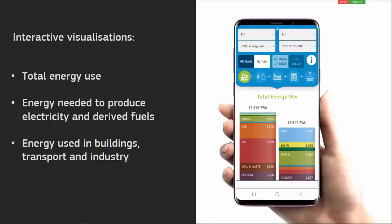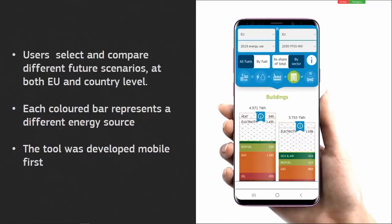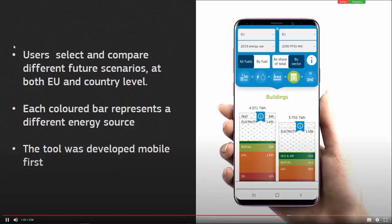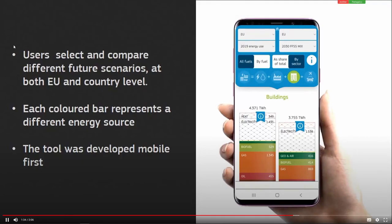The application consists of a series of interactive visualisations: the total energy use of the EU, the energy needed to produce electricity and derived fuels, and the energy used in buildings, transport and industry — the three key areas in which we consume energy in our daily lives. Users can select and compare different future scenarios at both EU and country level. Each coloured bar represents a different energy source. The tool was developed for mobile phones and for large screen presentations to ensure maximum usability and dissemination.